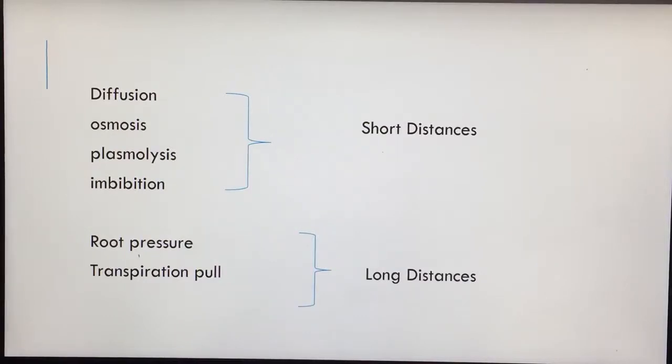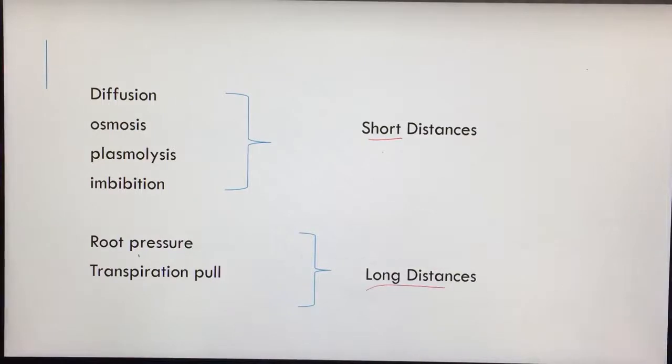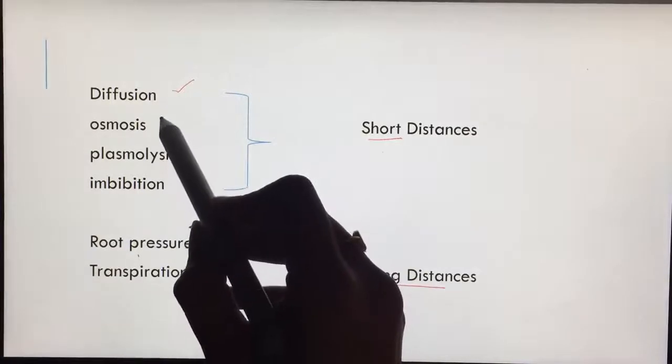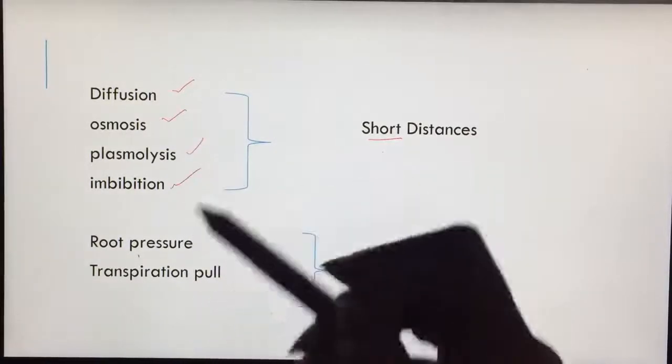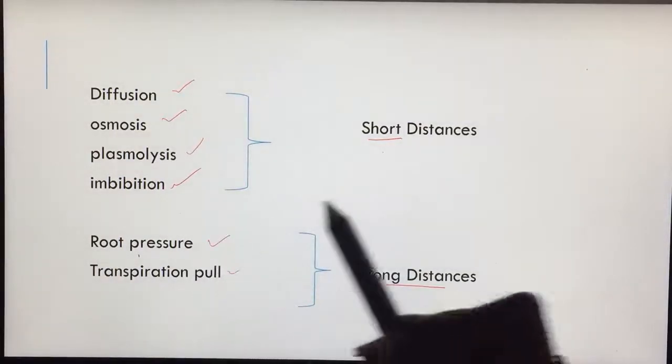Likewise, plants have also decided the modes of transport - different for shorter distances and different for longer distances. For short distances, today I'm going to discuss the shorter distances one - that is diffusion, which I've already discussed. Now the remaining ones are osmosis, plasmolysis, imbibition. And in the coming video, I'm going to discuss about root pressure and transpiration pull.